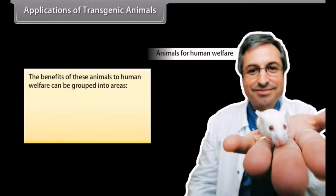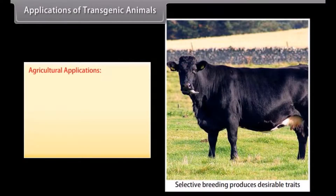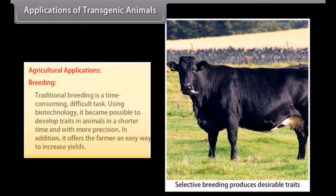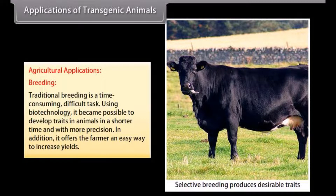The benefits of transgenic animals to human welfare can be grouped into agriculture, medicine, and industry. In agriculture, traditional breeding is a time-consuming and difficult task; using biotechnology, it became possible to develop traits in animals in a shorter time and with more precision. In addition, it offers the farmer an easy way to increase yields.